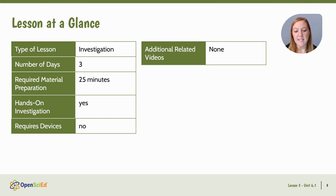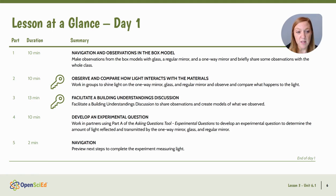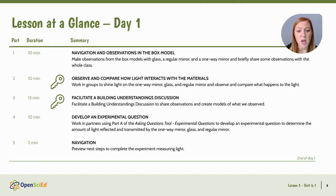This lesson is an investigation lesson that lasts about three days. It should take about 25 minutes of materials prep, and there are no devices or related videos needed. On day one, we are going to summarize what we figured out in lesson two and motivate the need to see the materials of glass and a regular mirror, since the one-way mirror seems to behave like both. We'll compare those materials and share observations, observe how light interacts with them by shining a flashlight on all three, build an understanding, create models, and then develop an experimental question about how much light is reflected and transmitted by all three materials.